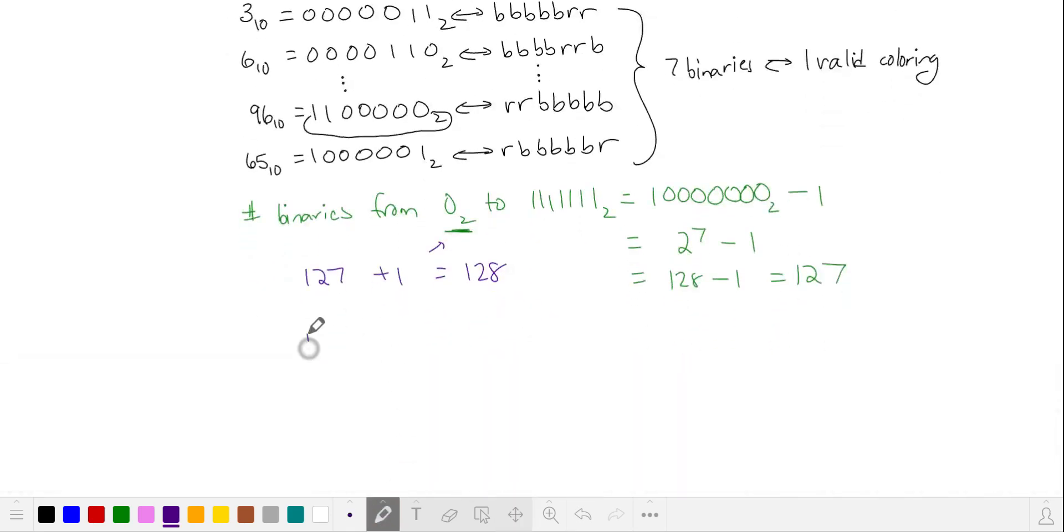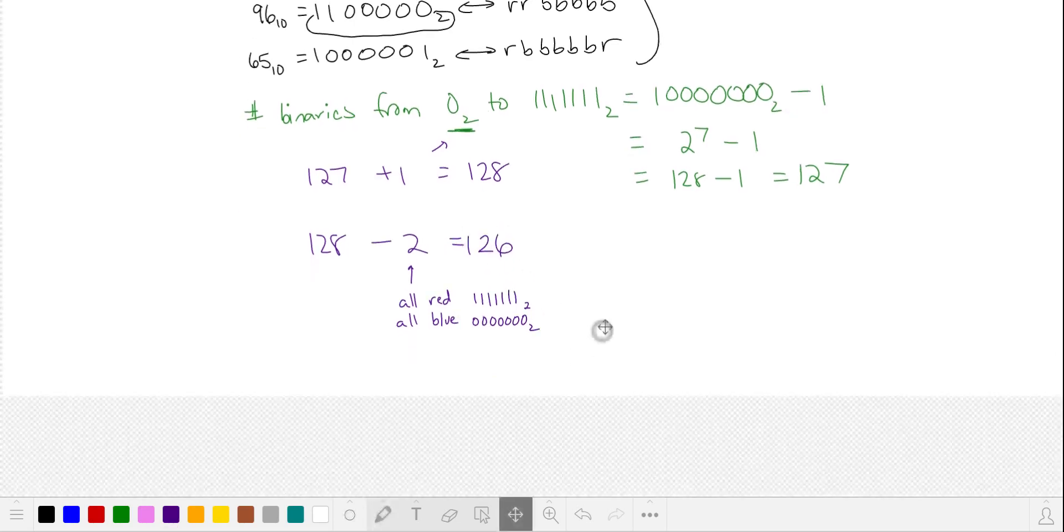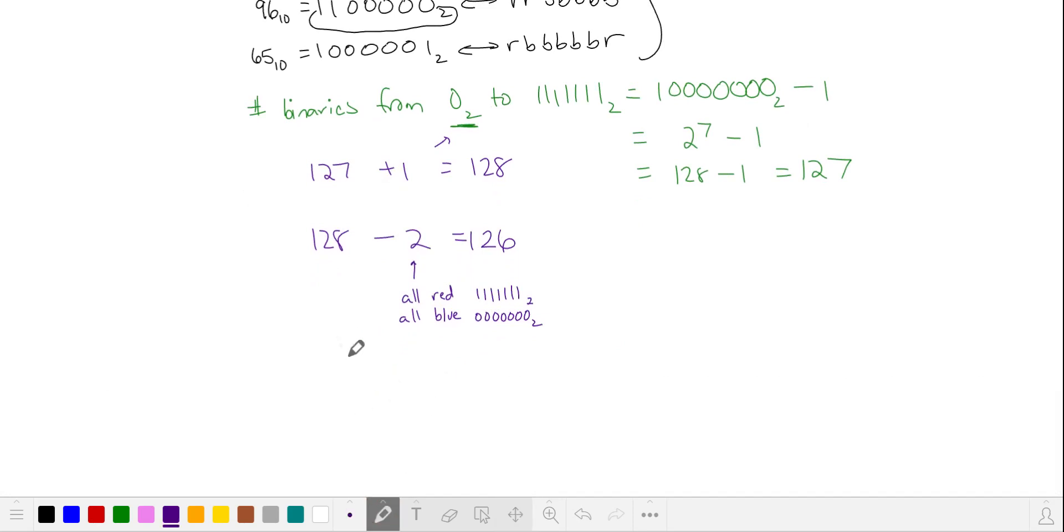Now I'm going to take my 128 and I'm going to subtract two yet again. I'm subtracting two because the colorings that are either all red or all blue. So all red is in binary and all blue is in binary. Those are only going to occur once when we count our binary numbers. So we don't have to divide by seven for these two colorings that leaves us with 126. We know we're on the right track because 126 is in fact a multiple of seven.